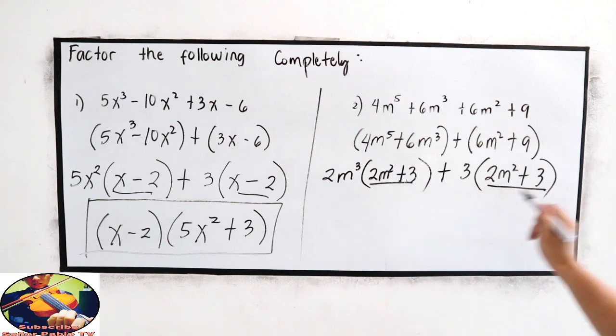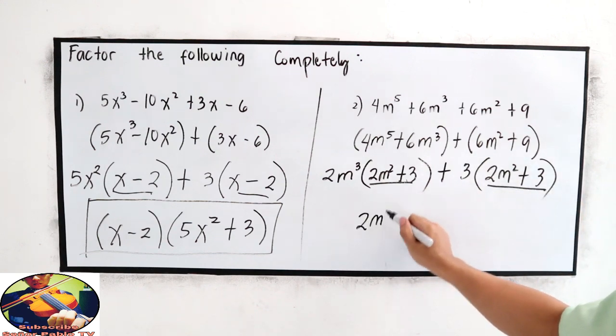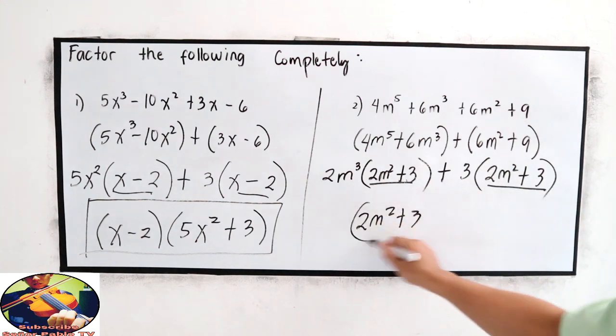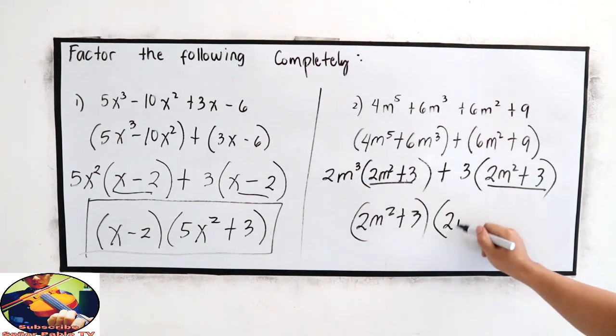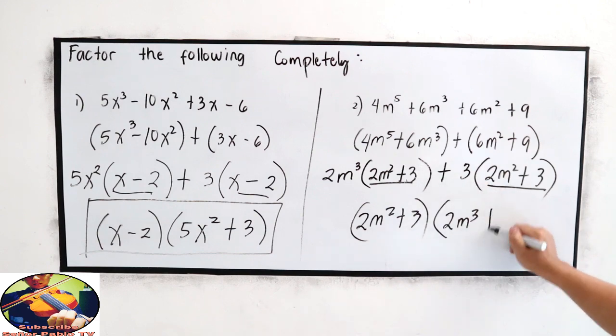Copy the common factor, 2m squared plus 3, and the expression outside the parentheses, 2m cubed plus 3.